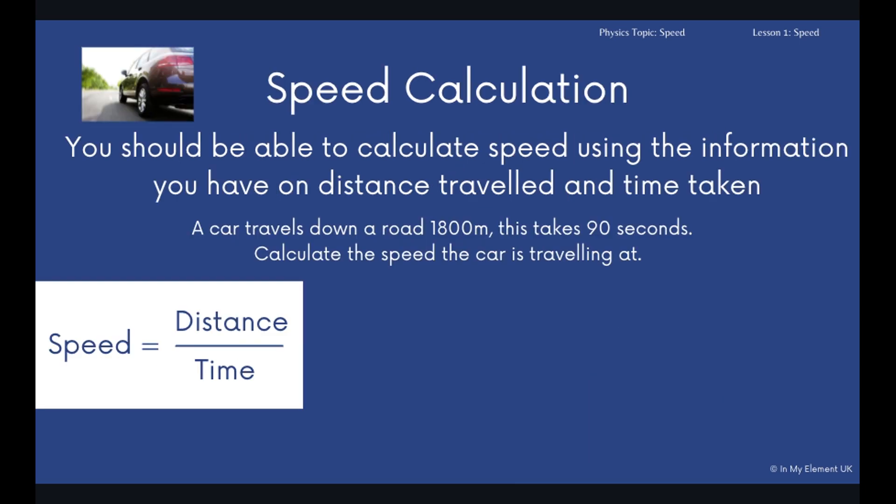You should be able to calculate speed using any information you've been given. So I've got an example here for you. A car travels down a road 1800 meters and it takes 90 seconds. Now you should be able to know from that what the units of the speed is measured in. We're talking meters and seconds, so it's quite straightforward.